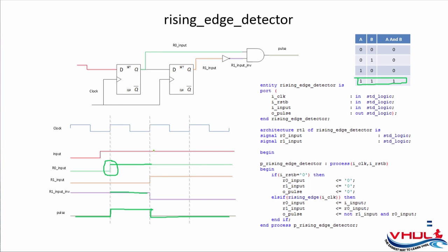This is the VHDL code for the rising edge detector. The inputs are clock and reset, then the input signal and the output pulse. There are two flip-flops: on reset, all flip-flops are set to zero. Then we have the first sampling and second sampling flip-flops.